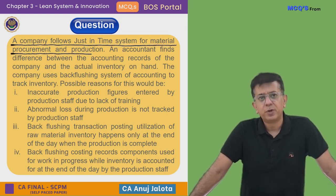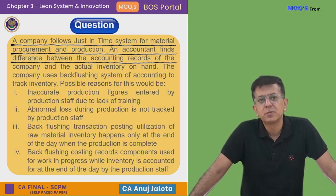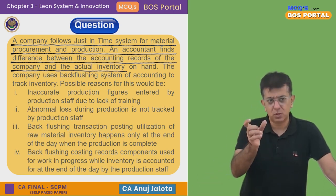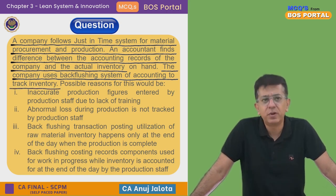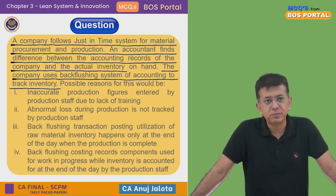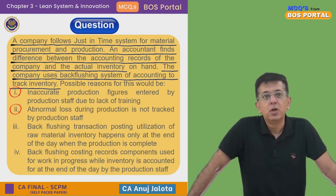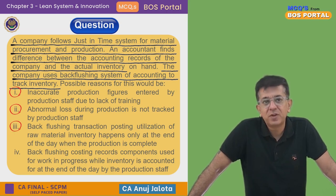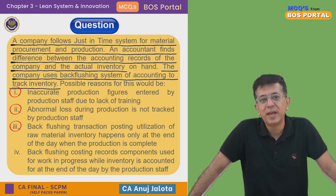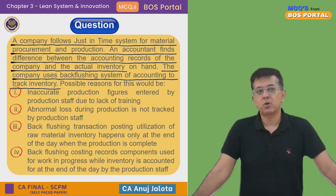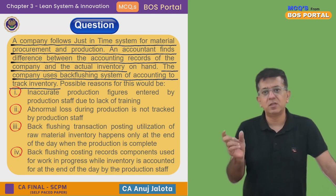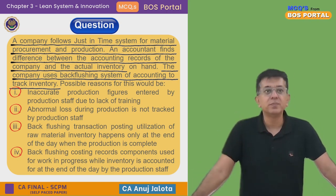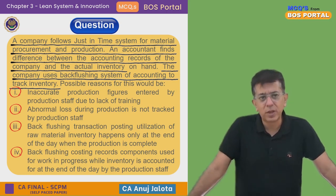The question is: a company follows a Just-In-Time system for materials procurement and production. An accountant finds a difference between the accounting records of the company and the actual inventory. They took the records as per accounts and actually counted the stock, but there was a difference. The company uses a back flushing system of accounting to track inventory. The possible reasons for this would be: first, inaccurate production figures entered by the production staff due to lack of training; second, abnormal loss during production is not tracked by the production staff; third, back flushing transaction posting — utilization of raw material happens only at the end of the day when production is complete; fourth, back flushing costing records components used for WIP while inventory is accounted at the end of the day by the production staff.